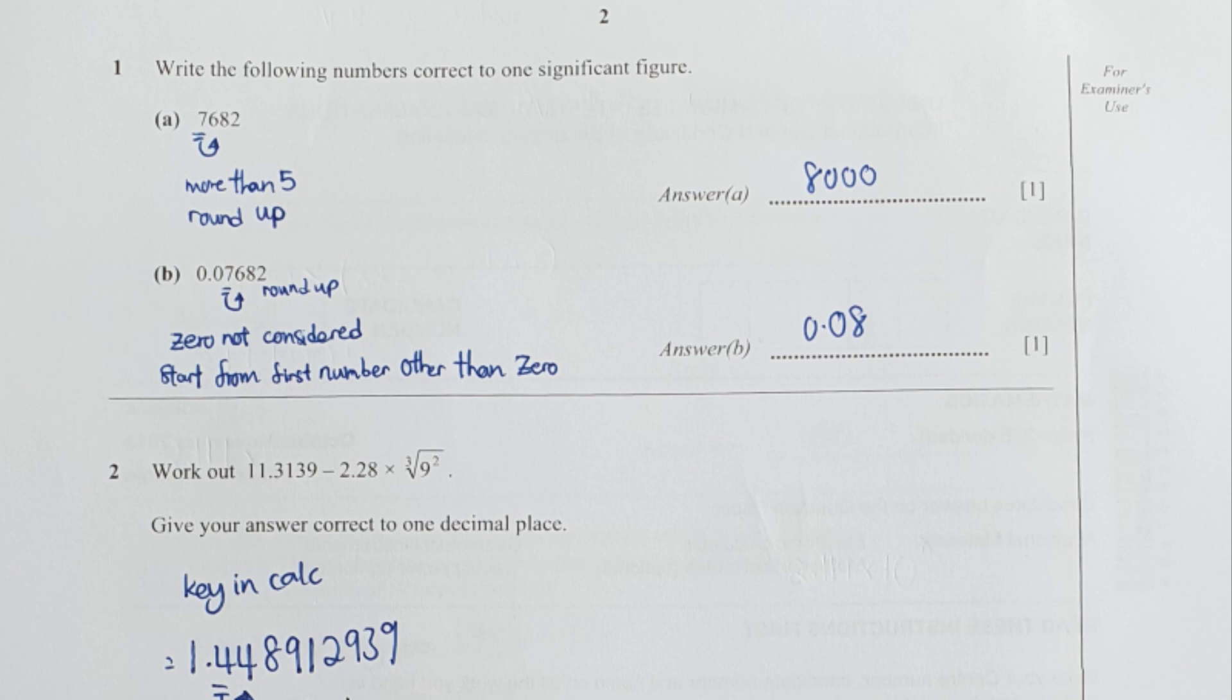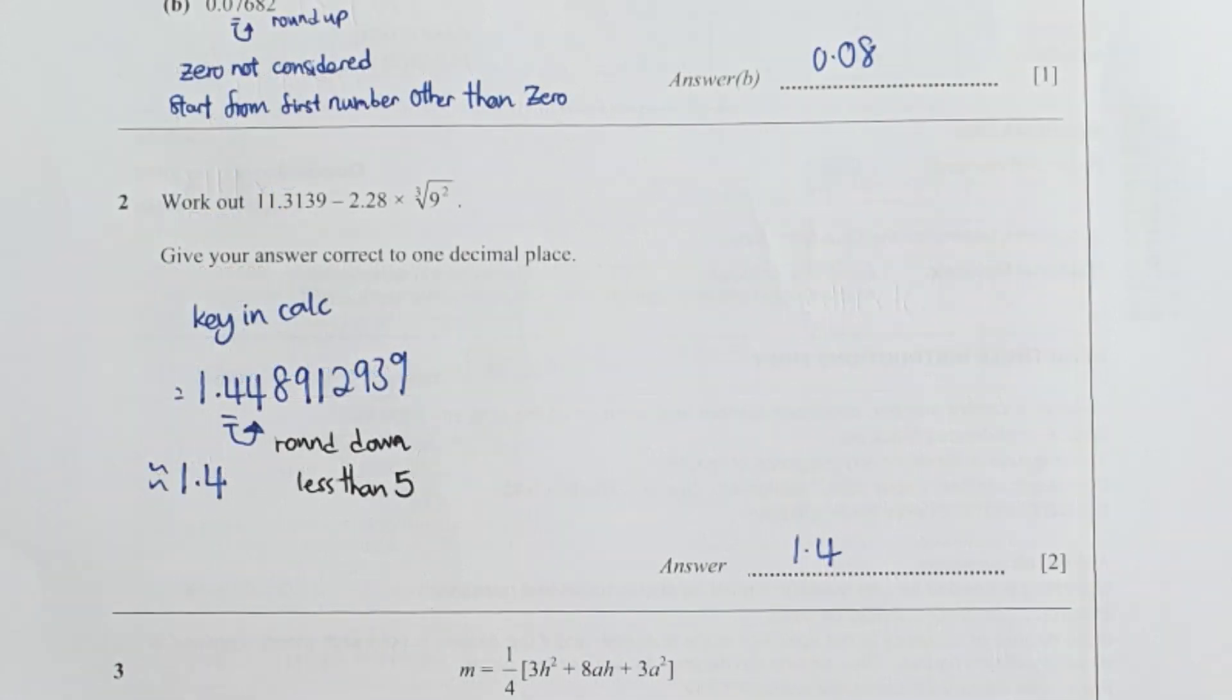Question two, pretty straightforward, just key into the calculator. Since they mentioned about having one decimal place only, for 1.4 you're required to look at the value behind the four, which is also four, which is less than five. Hence you're required to round it down, so final result is 1.4.